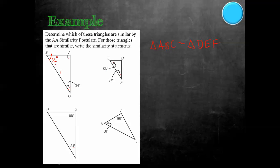Now let's look at another triangle — it has 34 and 88. Up here we have 34 and 90, so those numbers are different. Since these two are not the same, this triangle is not similar to the others. However, looking at a third triangle with 90 and 56 — we already solved that triangle ABC and DEF both have 90 and 56 — so triangle ABC is similar to triangle DEF, which is also similar to triangle JKL. All three of those triangles are similar.